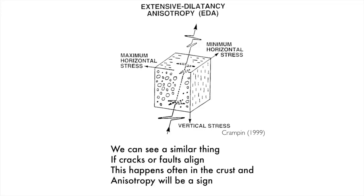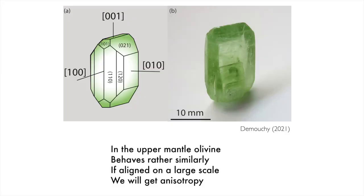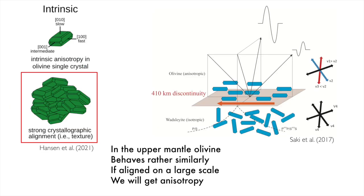We can see a similar thing if cracks or faults align. This happens often in the crust and anisotropy will be a sign. In the upper mantle, olivine behaves rather similarly. If aligned on a large scale, we will get anisotropy.